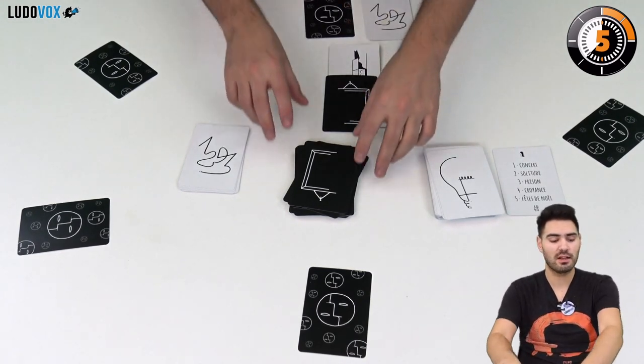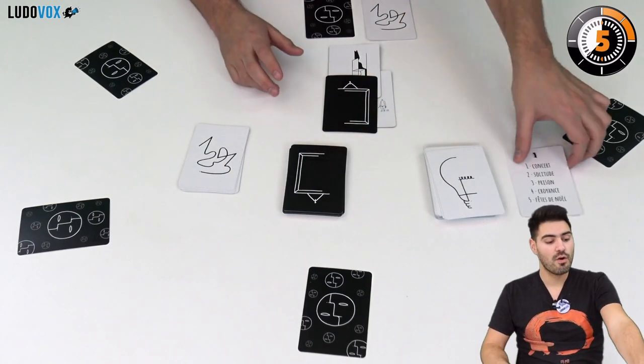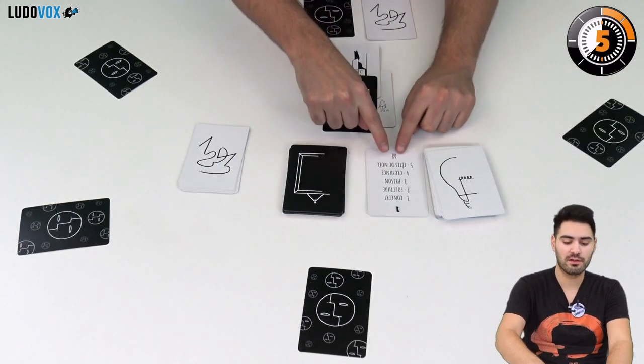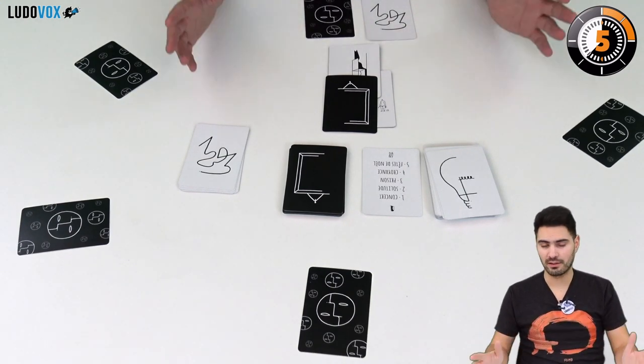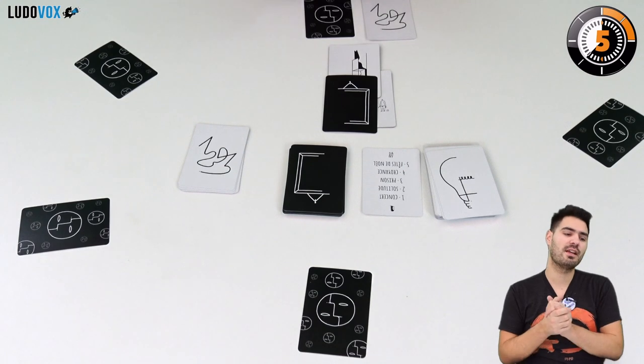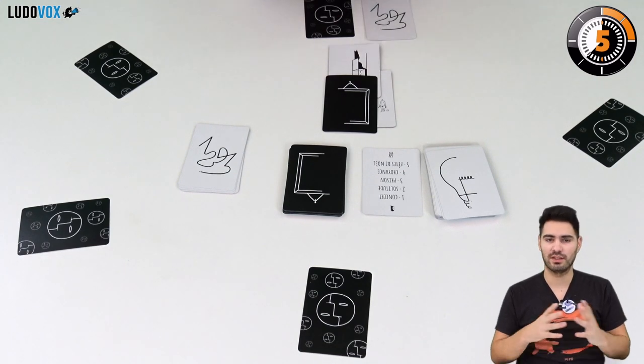If there is a mistake. If for example they say prison. We're going to flip that card to the other side. And it's a point for Danny. But Danny should not rejoice blatantly. Because Danny has to stay discreet until the end of the game.